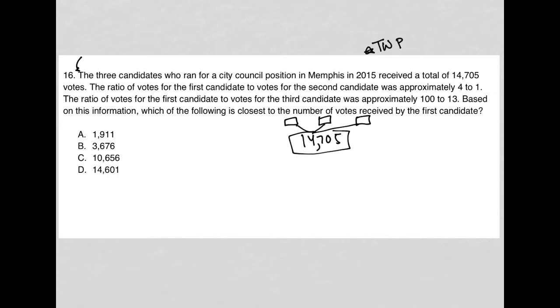The ratio of votes for the first candidate to votes for the second candidate was approximately four to one. So four to one. I like to write ratios as fractions on this test. So I'll say four to one. This is first candidate to second candidate is what that equals.